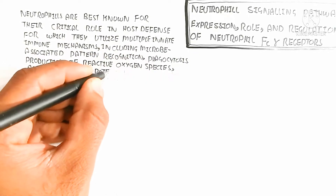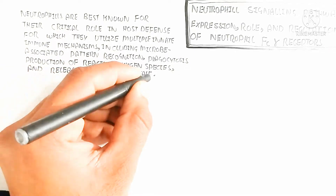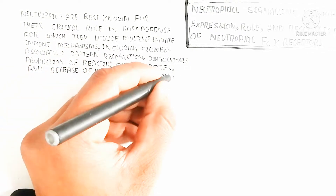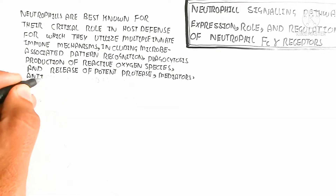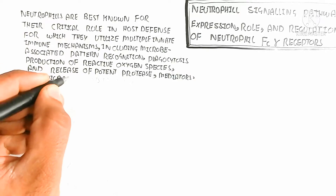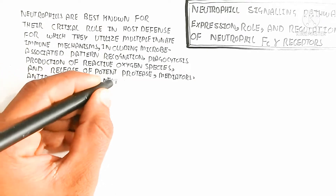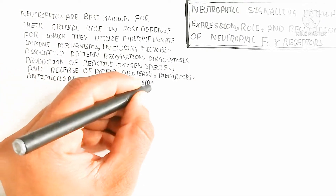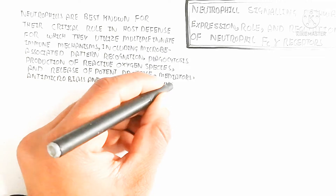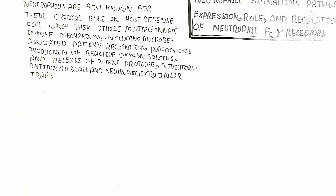Let's begin with an overview. We will first discuss the types of receptors present on the neutrophil — these are made up of the Fc portion receptor gamma, known as the Fc gamma receptor.